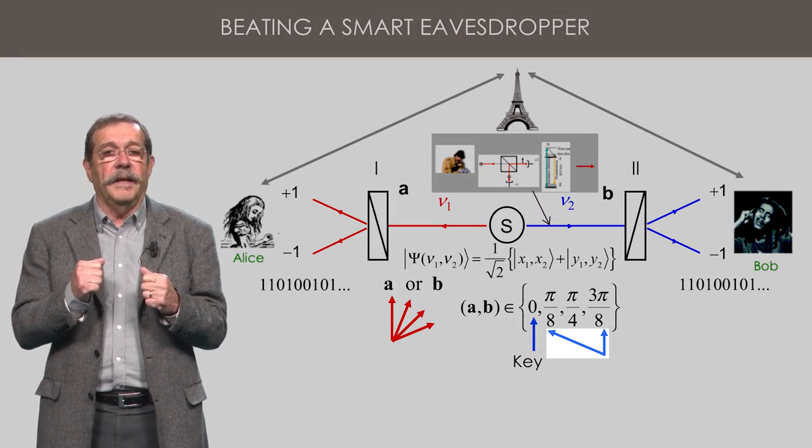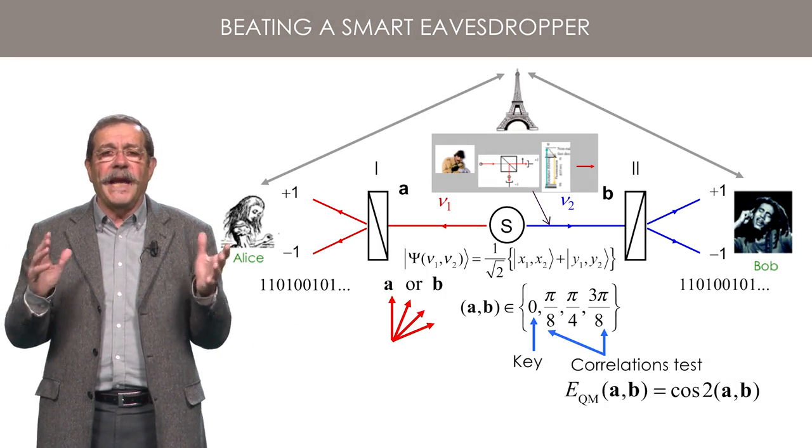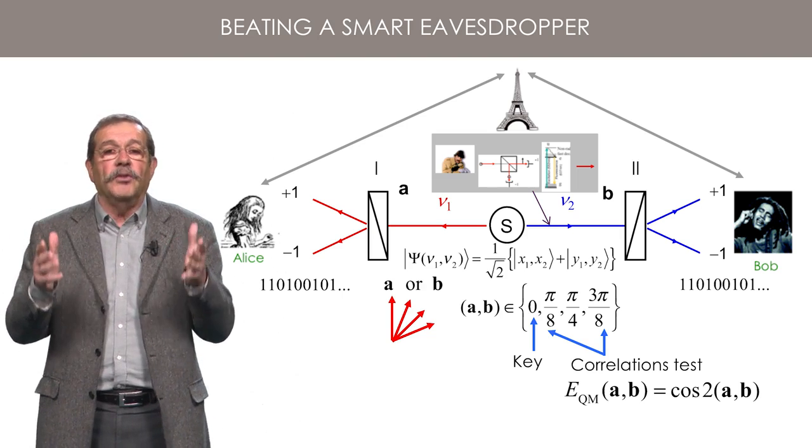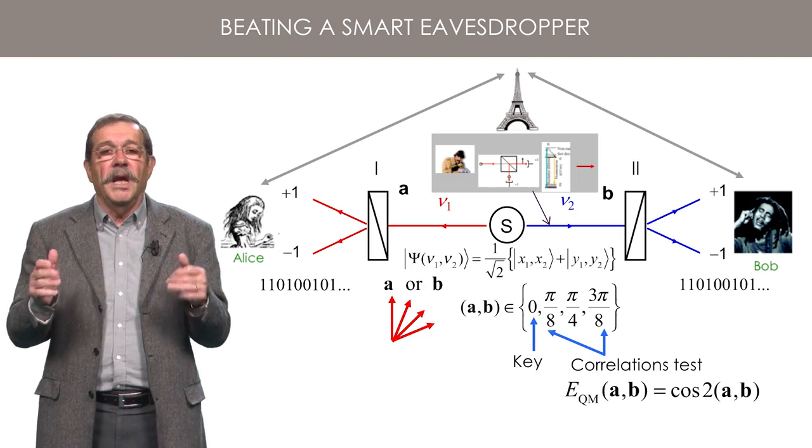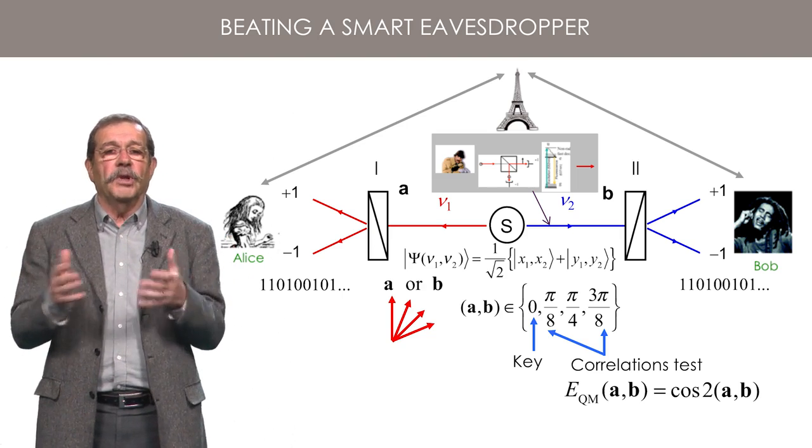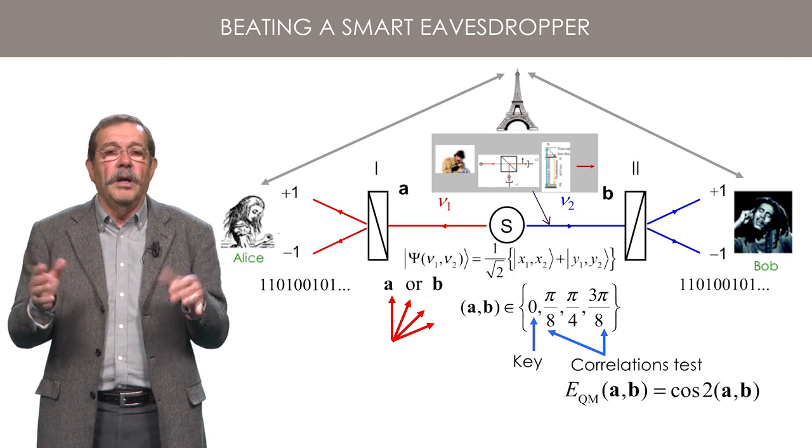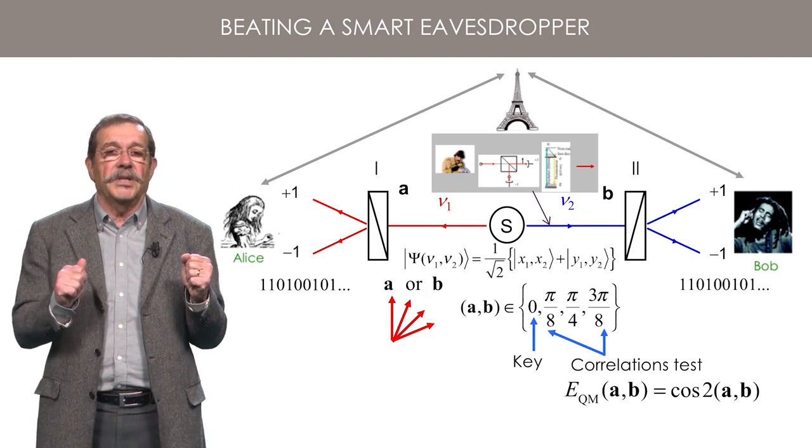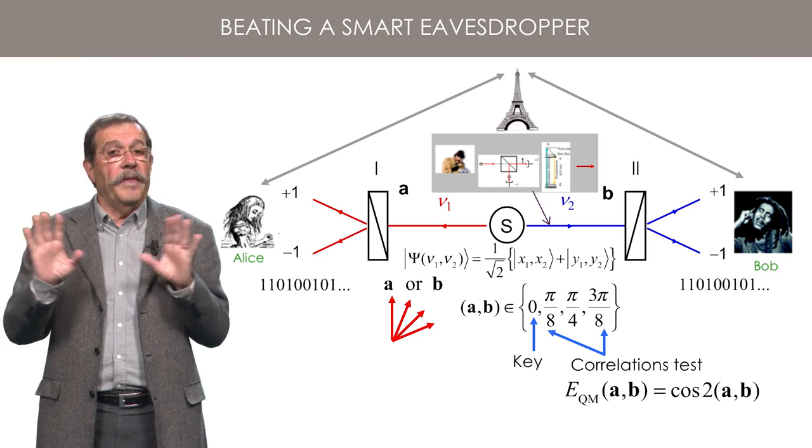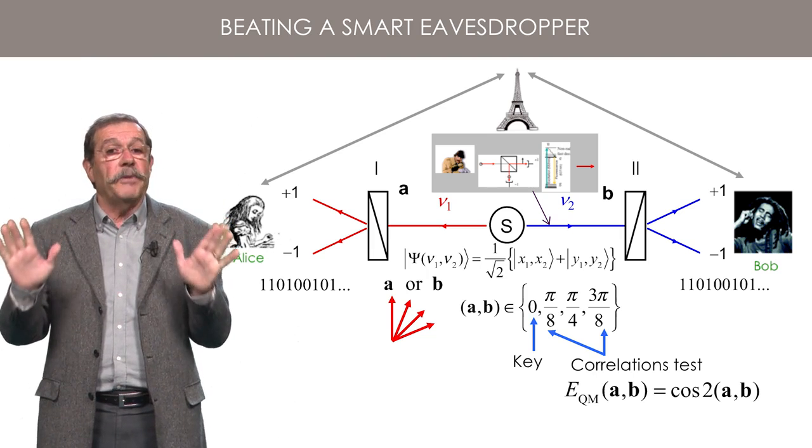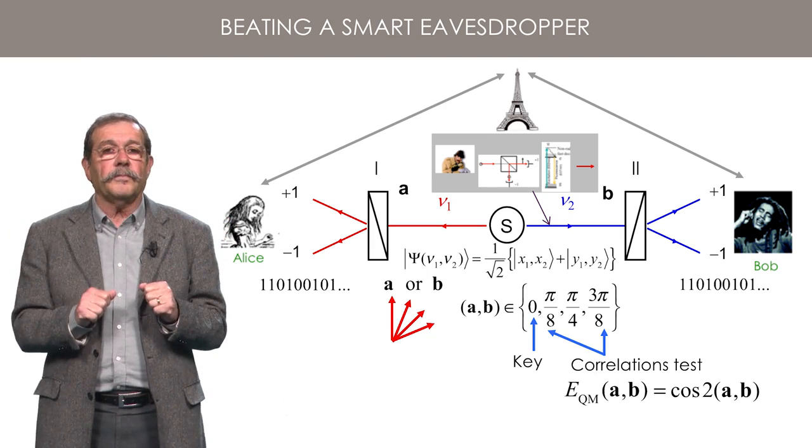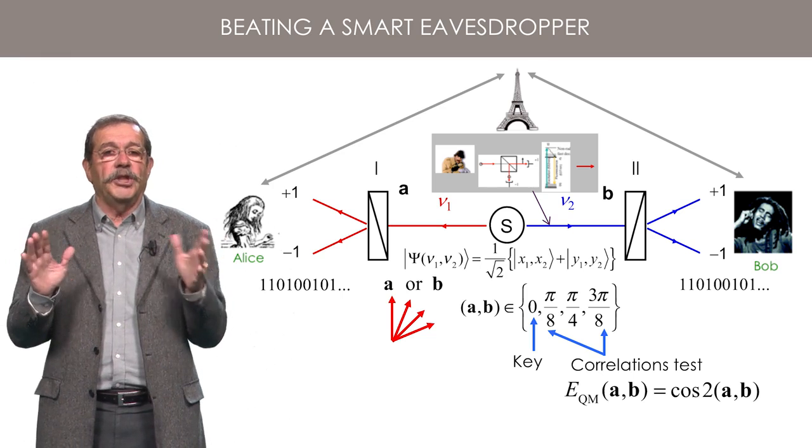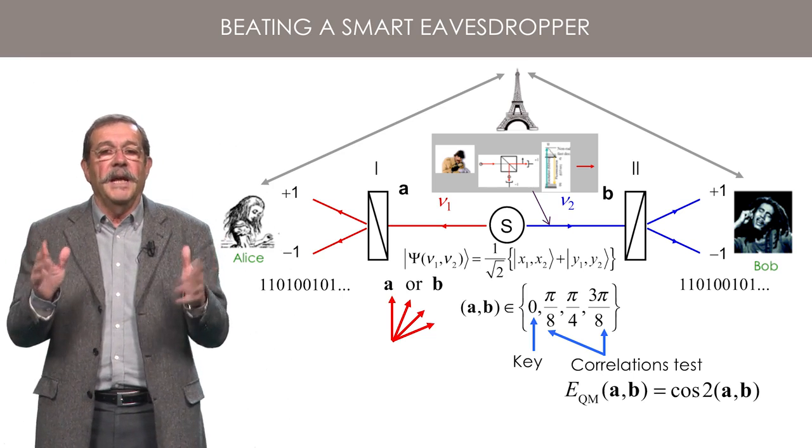The second series of data allow them to check that the correlations they find are the ones expected for the EPR pairs at known angles of the polarizers. If there is an eavesdropper making a measurement along another direction than the one of Bob, the correlations will be different from the ones expected for the EPR pairs. In that case, Alice and Bob know that there is a spy on the line and they will refrain from using the key.